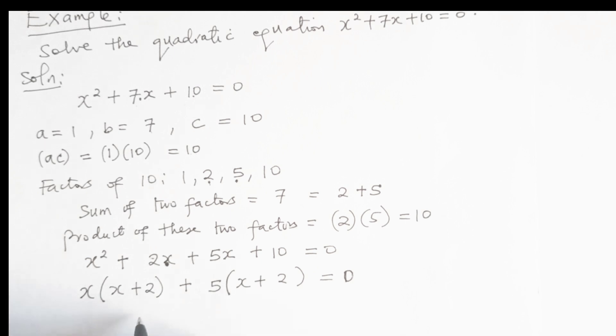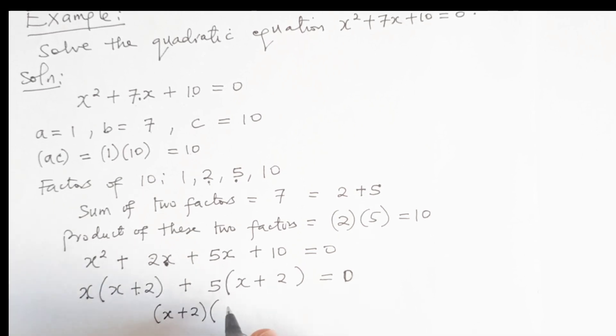So at this point, we will write this as x plus 2 multiplied by x plus 5 equal to 0.